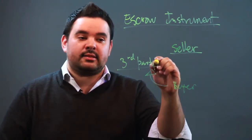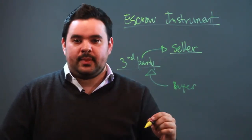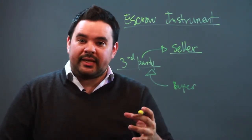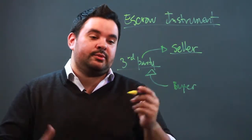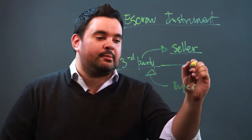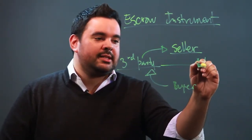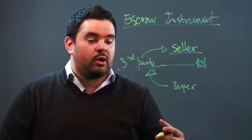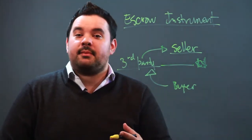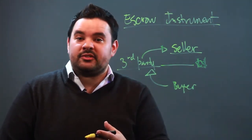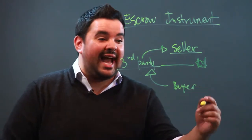Once the sale is completed, that money will be transferred to the seller. Now, the instrument is exactly what's being transferred. In this example it would be money, but sometimes if you're buying an investment or making some other type of deal, maybe the deed to a piece of property or the deed to a specific asset...